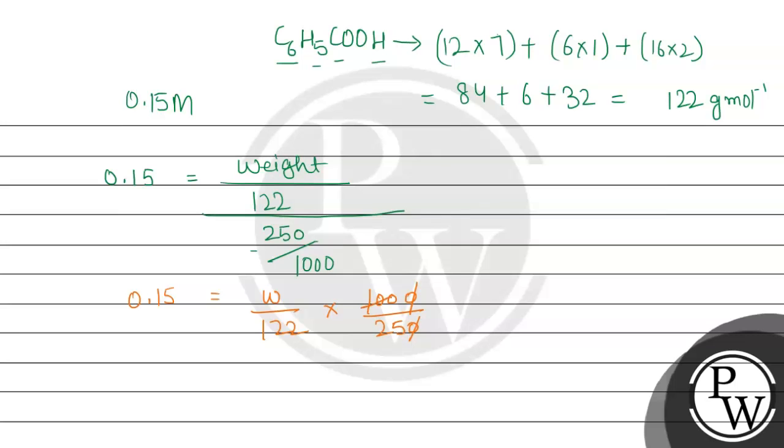So this value comes out to be 0.15 equals w divided by 122 multiplied by 1000 divided by 250. So if we cancel it, it will be 4. So the weight comes out to be 0.15 multiplied by 122 divided by 4. By this multiplication and division, 18.3 divided by 4 equals 4.575.